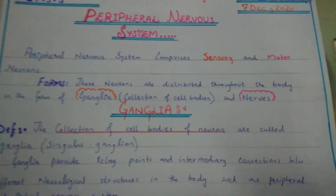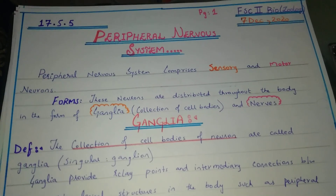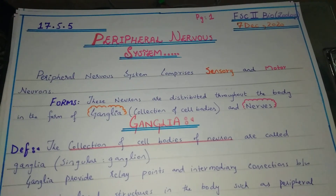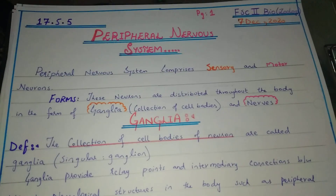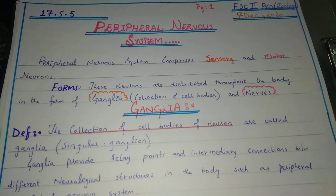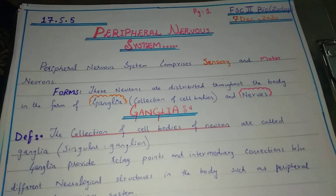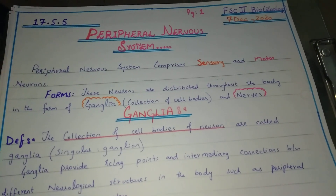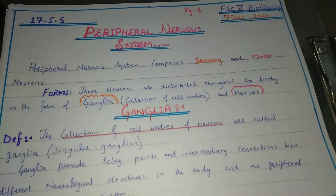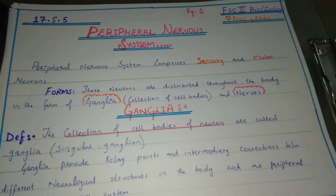Hello students, today the topic is the peripheral nervous system. As we have already discussed nervous coordination in previous weeks, today we focus on the peripheral nervous system. The nervous system is divided into the central nervous system and the peripheral nervous system. The central nervous system contains the brain and spinal cord, while the peripheral nervous system consists of sensory neurons and motor neurons.